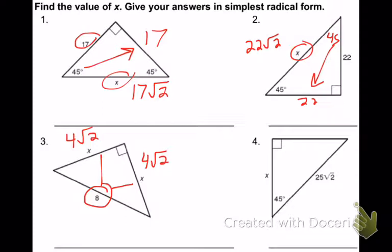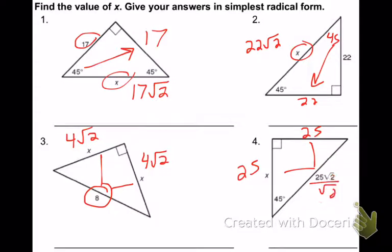Number 4: hypotenuse is given as 25 square root of 2. Both legs are going to be 25 — because dividing by square root of 2 cancels the radical, leaving just 25. You have to be able to recognize the relationships there.